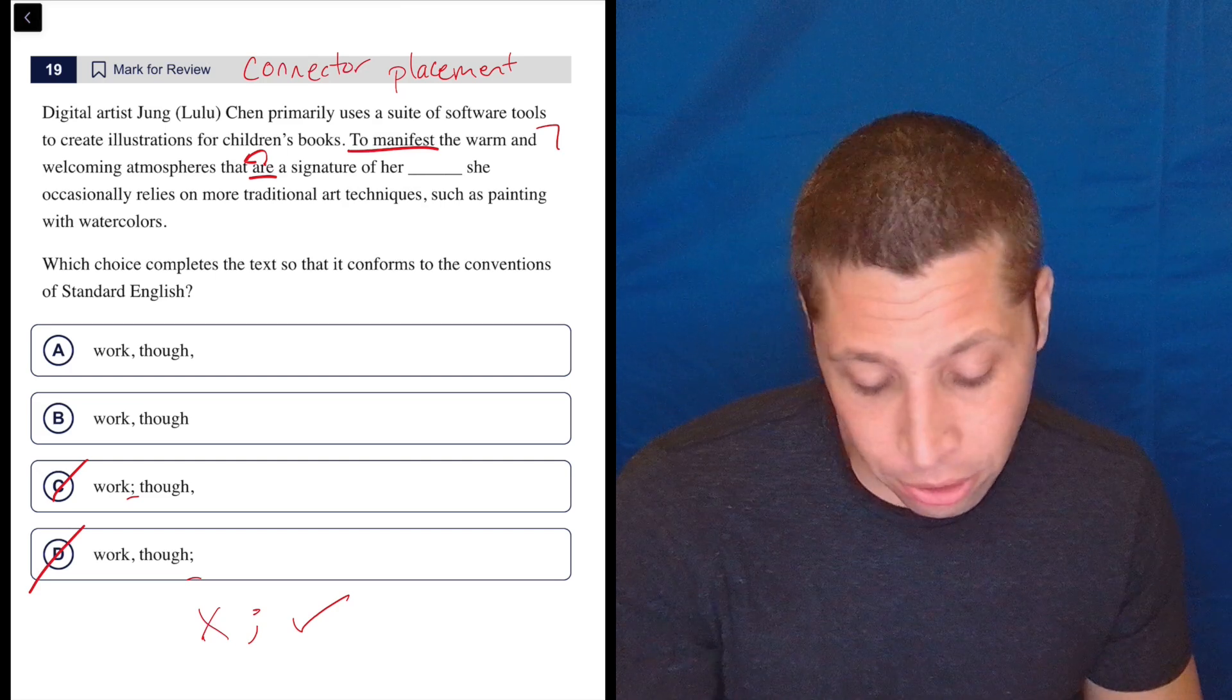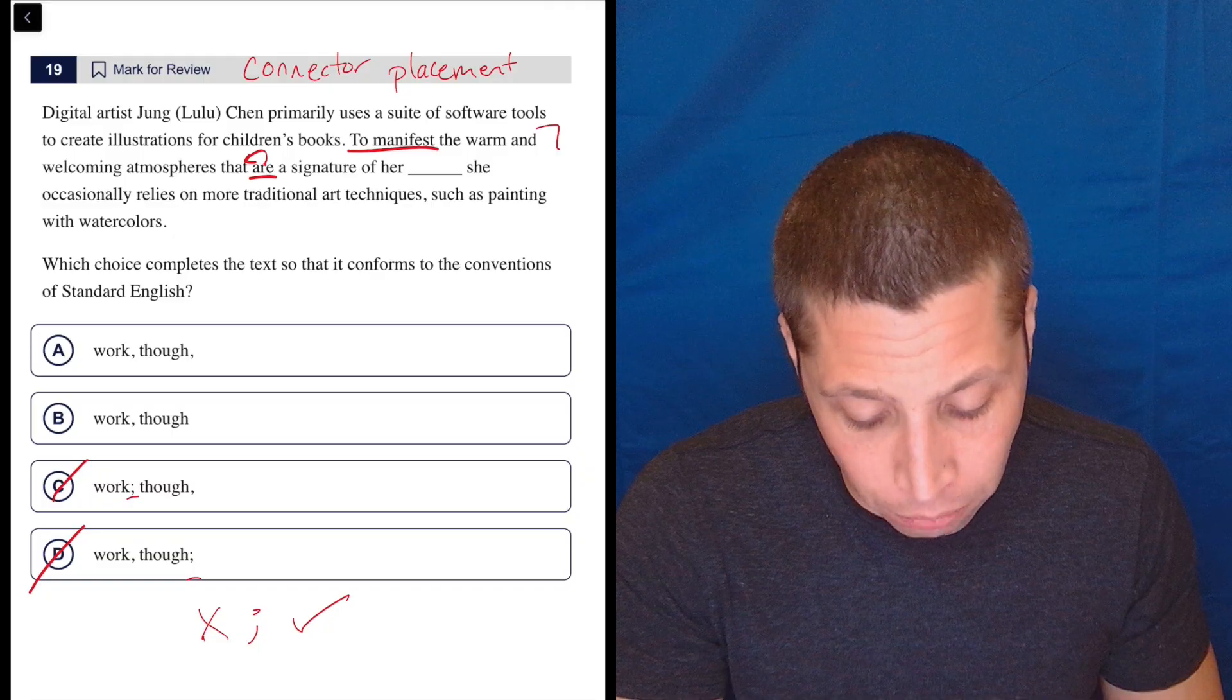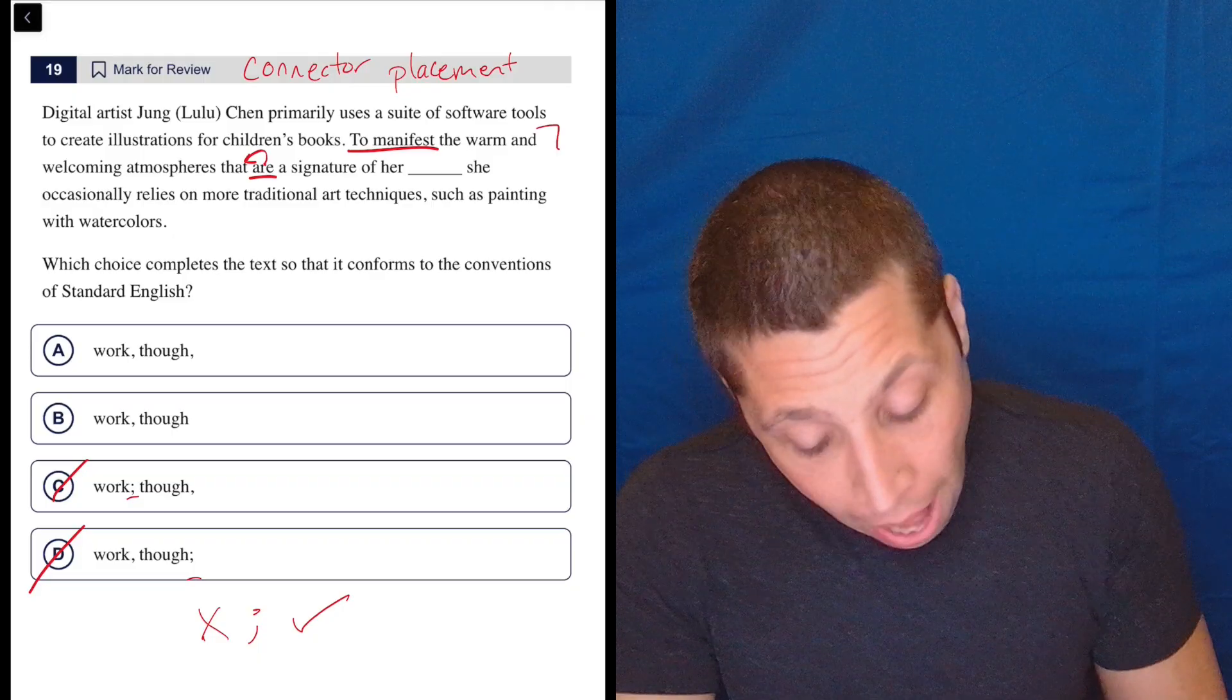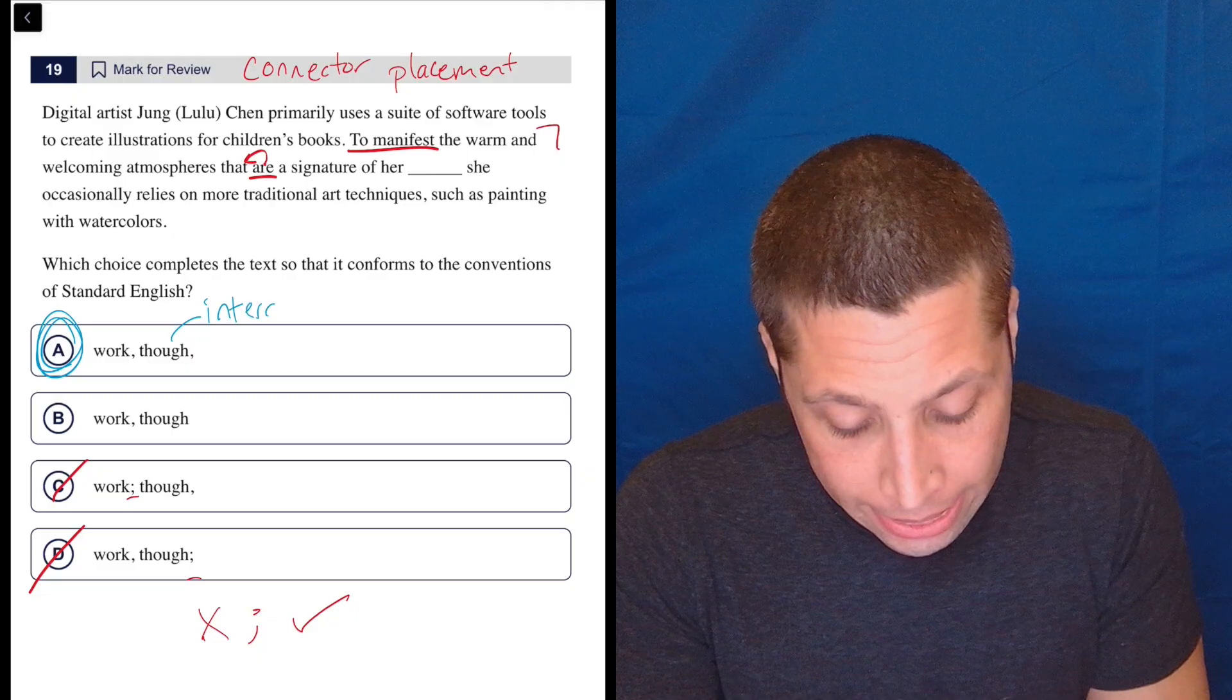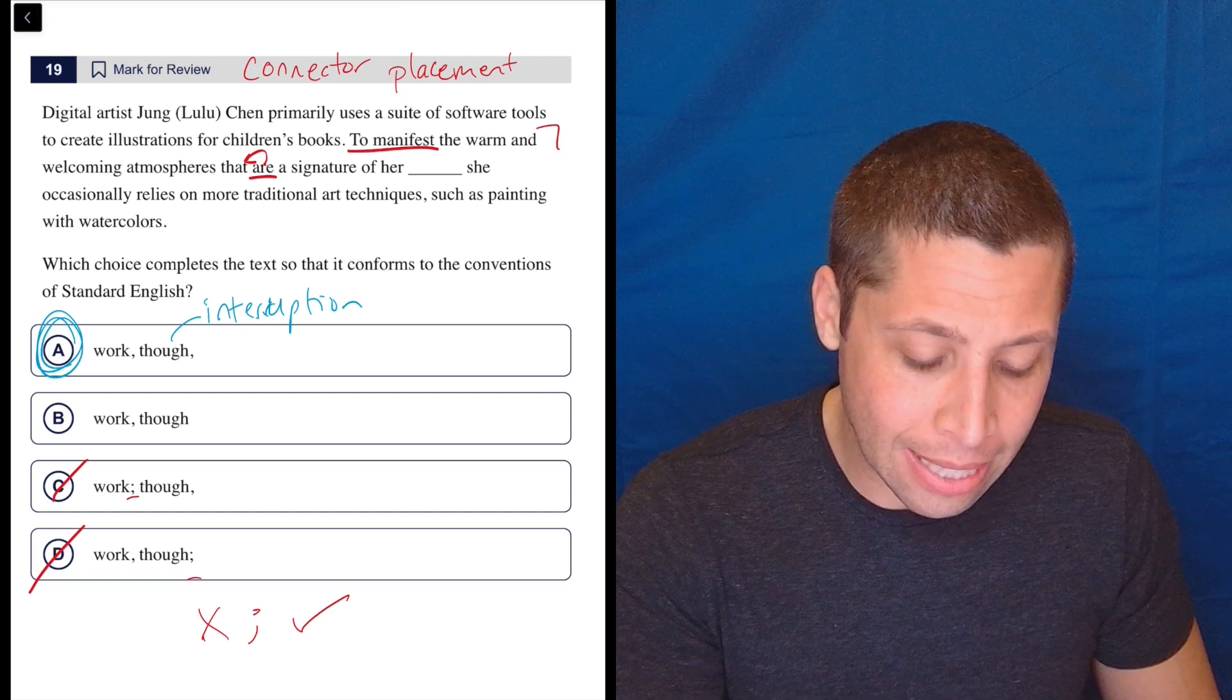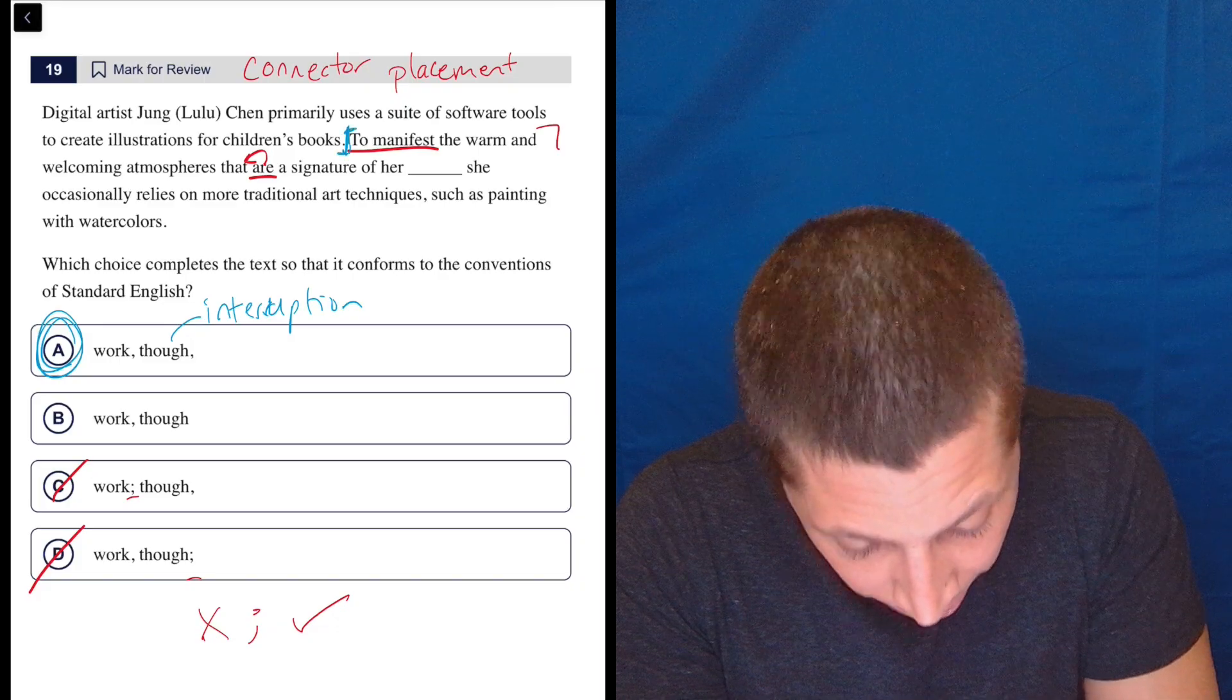So what I would be doing here is just reading with the 'though' and trying to see how it fits in all this: 'to manifest the warm and welcoming atmospheres that are a signature of her work though. She occasionally relies on more traditional art techniques such as painting with watercolors.' For me, it's kind of obvious now—the word 'though' is an interruption. It's getting thrown in the middle of this sentence when it really belongs right here, between the two sentences.